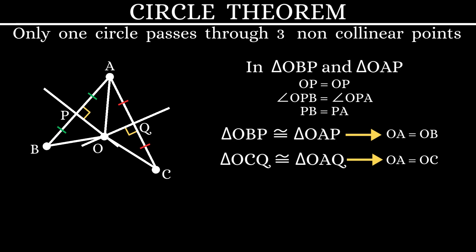From these two statements, we can conclude that OA, OB, and OC are all equal. Which means the point O is equidistant from the points A, B, and C.